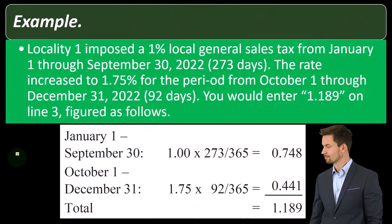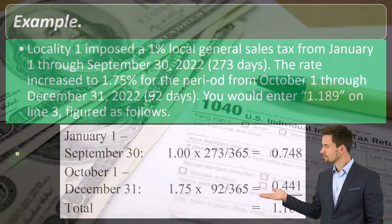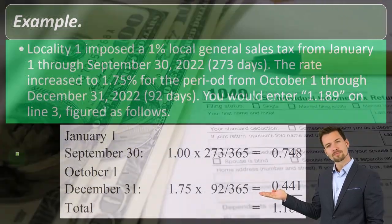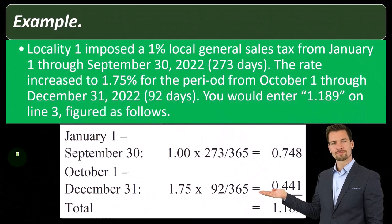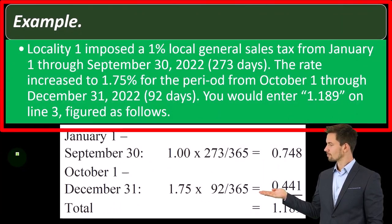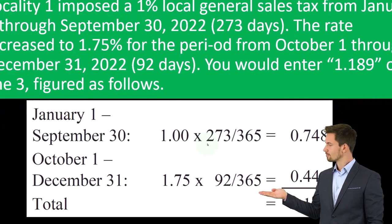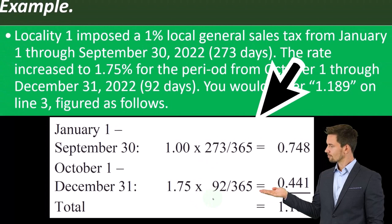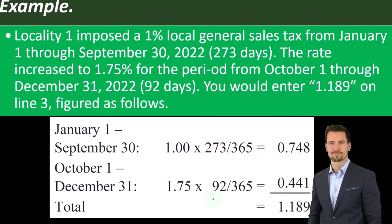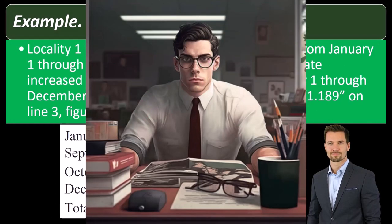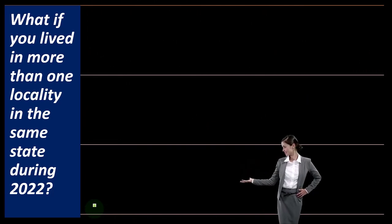For example, locality one imposed a 1% local general sales tax from January 1st through September 30th, 2022 — 273 days. The rate increased to 1.75% for the period from October 1st through December 31st, 2022 — 92 days. You would enter 1.189 on line three, figured as follows: 1% times (273 divided by 365), plus 1.75% times (92 divided by 365). This ratio-fractioning method comes up often in different types of tax problems — it's a good tool to keep in mind, and hopefully your tax software can help you apply it in practice.